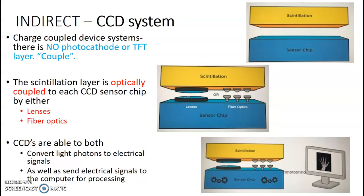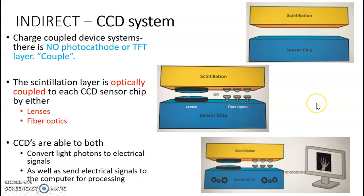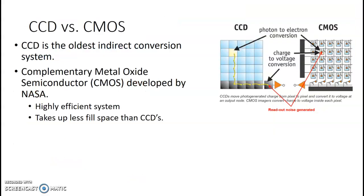The CCD system doesn't have the photodiode or TFT layer. Literally, charge coupled device — 'coupled' means it's coupled to the scintillator. It takes those x-ray photons in, changes them to a burst of light, and uses either lenses or fiber optics to get to the sensor chip. CCDs convert light photons to electrical signals and send those binary numbers — zeros and ones — to get your image. You might hear both terms CCD or CMOS; they are essentially the same thing. The CCD is the oldest indirect conversion system; CMOS stands for complementary metal oxide semiconductor, was developed by NASA, is a highly efficient system, takes up less space than CCDs, but their role is essentially the same.